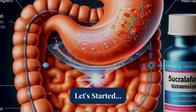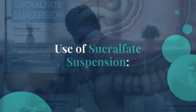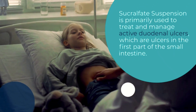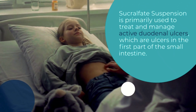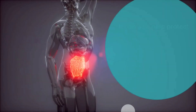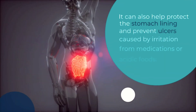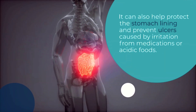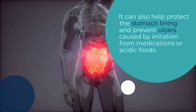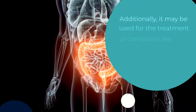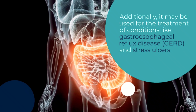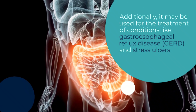Starting with the uses of sucralfate suspension. Sucralfate suspension is primarily used to treat and manage active duodenal ulcers, which are ulcers in the first part of the small intestine. It can also help protect the stomach lining and prevent ulcers caused by irritation from medications or acidic foods. Additionally, it may be used for the treatment of conditions like gastroesophageal reflux disease and stress ulcers.